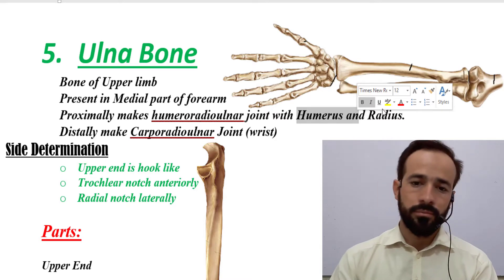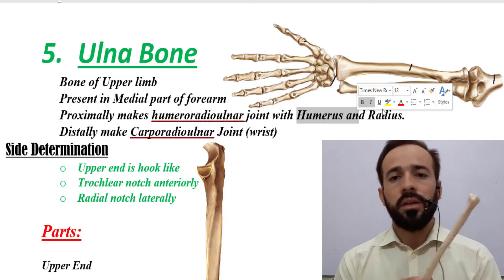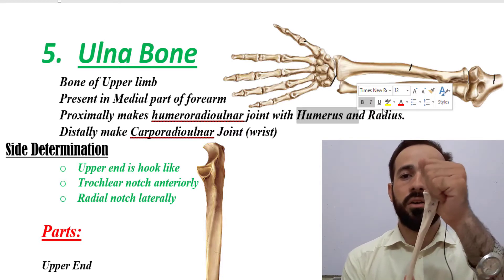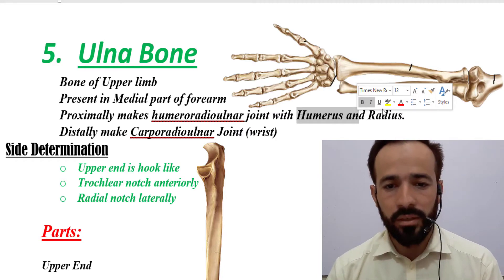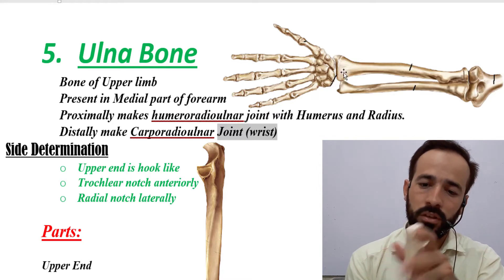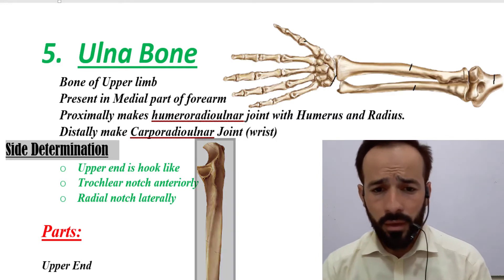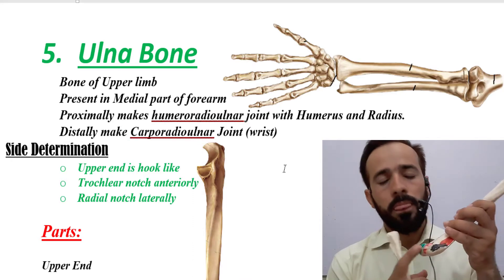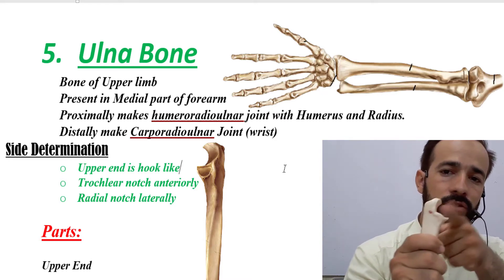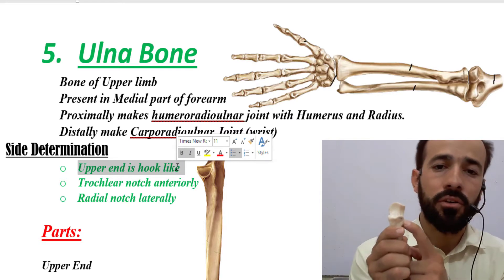Now, how do we determine whether the ulna bone is from the right or left upper limb? For side determination, you should know that the upper end of this bone is hook-like. Keep the hook-like part superiorly — this is the upper end, which is broader — and the lower end is narrow. Then keep the trochlear notch anteriorly, as you know from the humerus lecture, and the radial notch laterally.